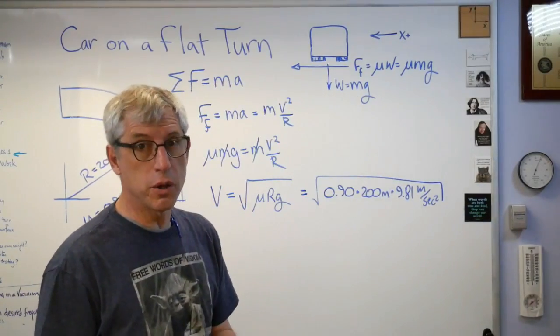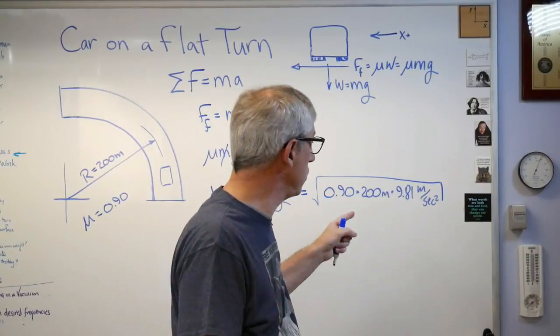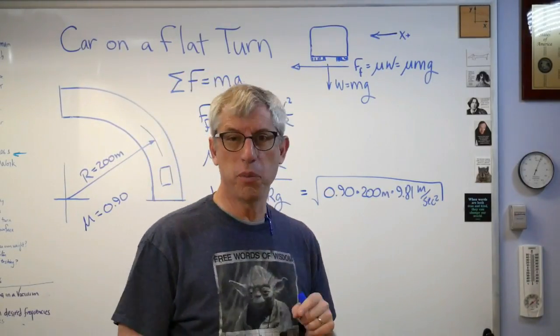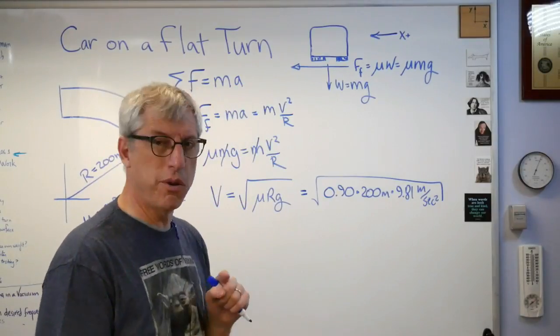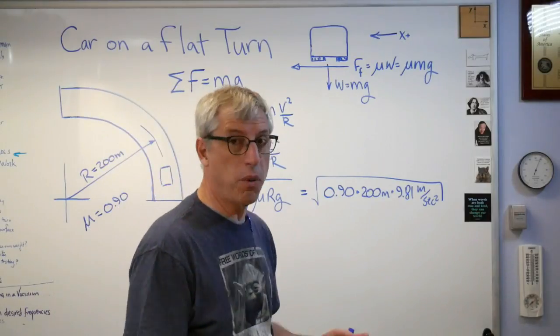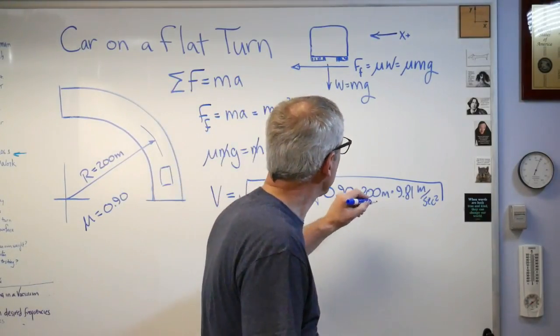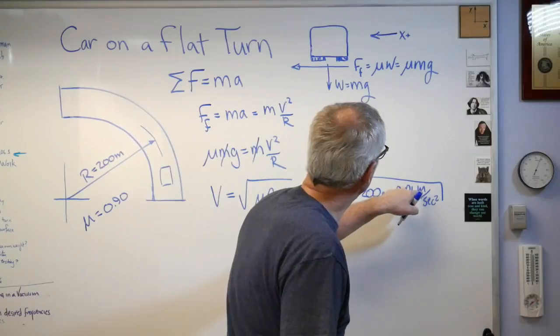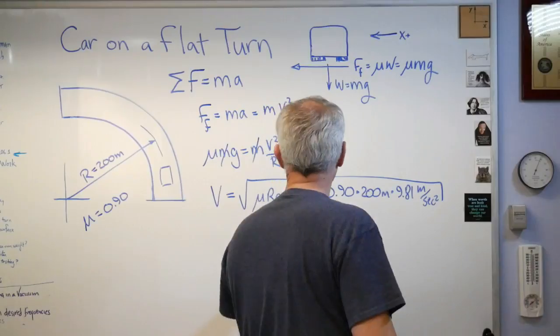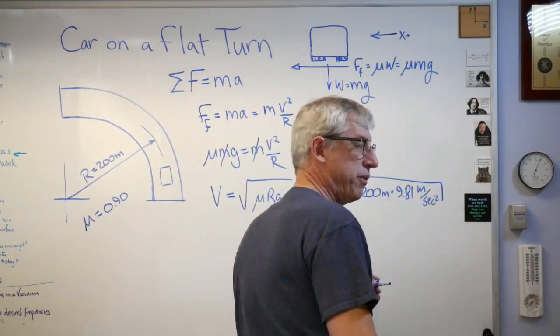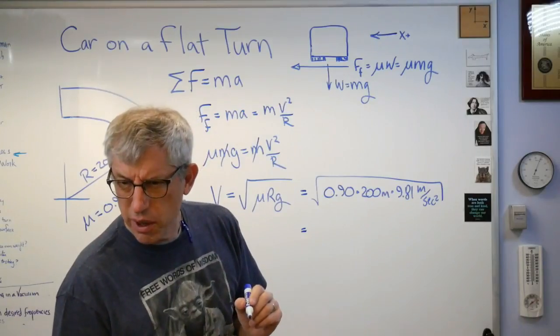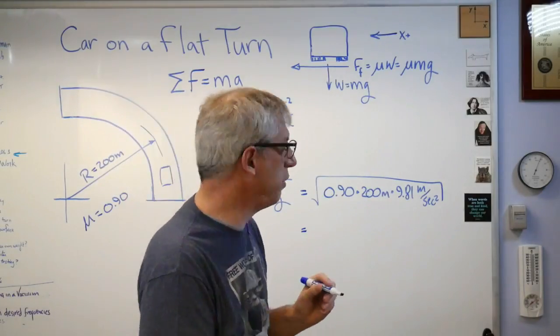So 0.9 times 200 meters times... Let's check. Are the units going to work out? Because remember, gang, always track your units through the problem. If the units are right, the numbers will pretty much come along for the ride. If the units are wrong, there is no chance that the numbers are right. That's a great check, so why would you ever throw that away? I'm going to get meters squared over second squared, square root, meters per second. I'm a happy guy. I worked this number out before I hit the record button. It turns out to be 42.021 meters a second.